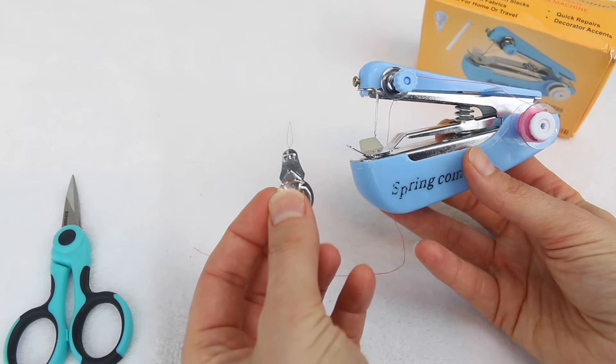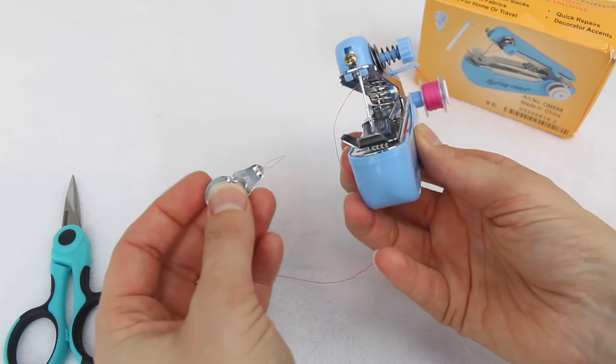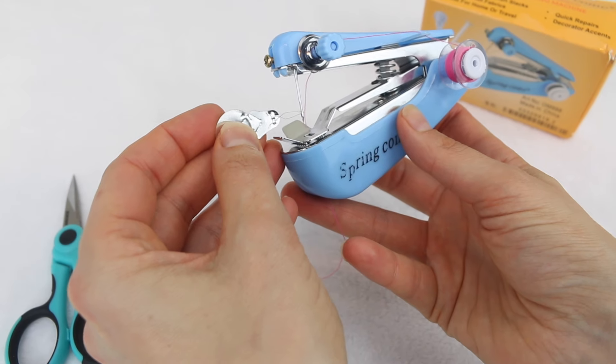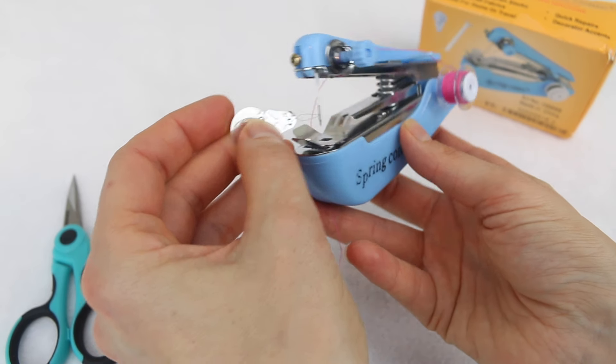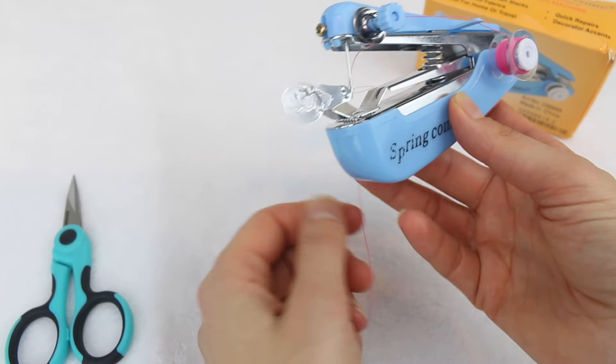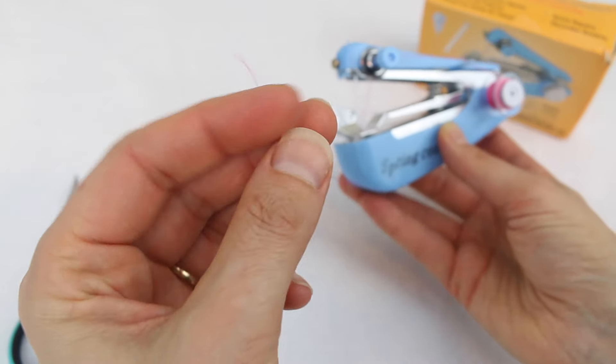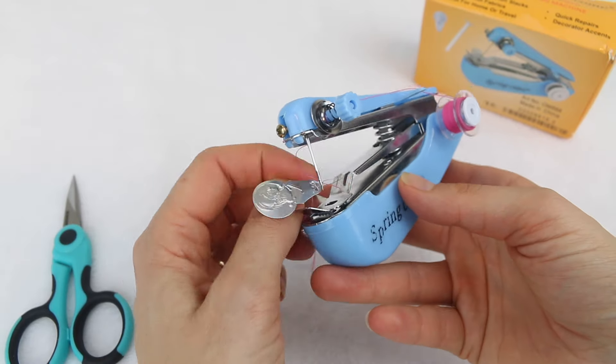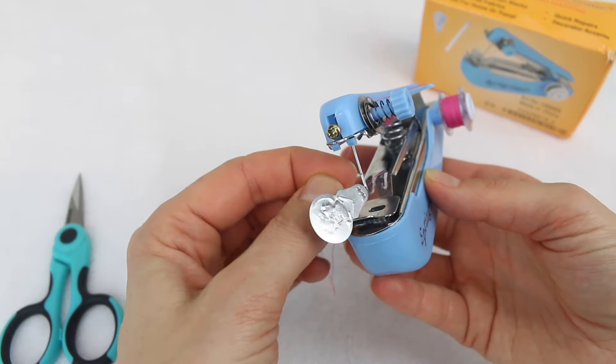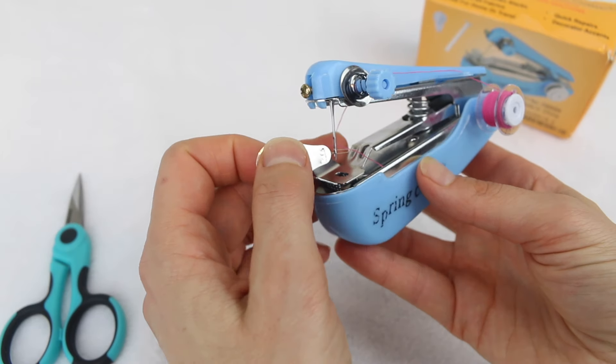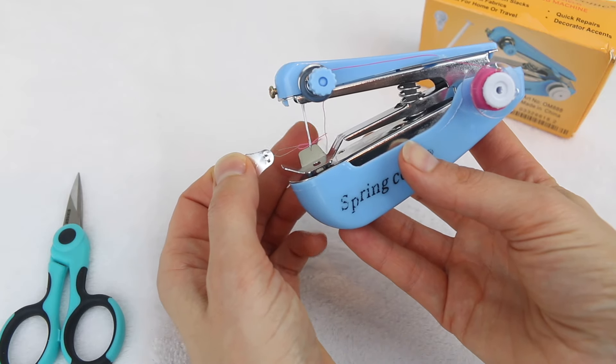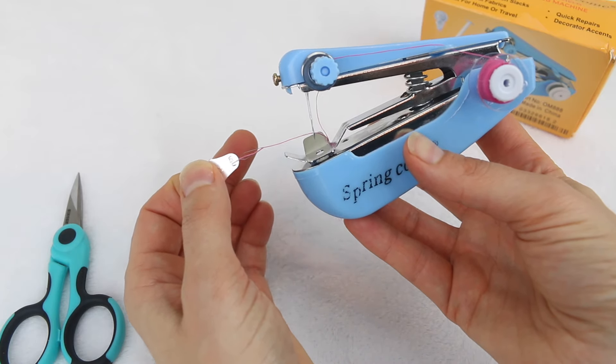And the best way to do this is to use this little needle threader. So put the needle threader through the eye of the needle. And I'm just going to pass the thread through. Let's pull that needle threader through and the thread tail should follow it through the eye of the needle.